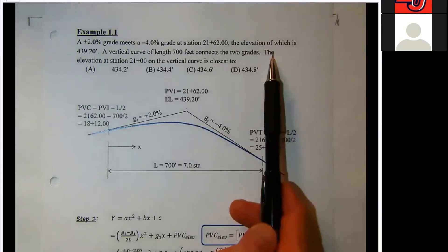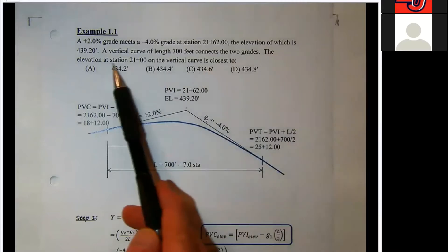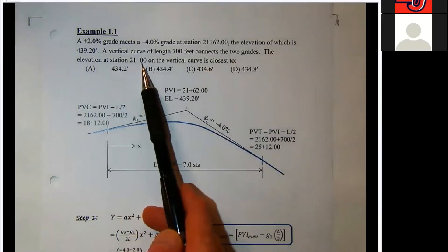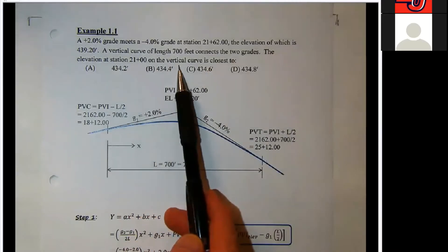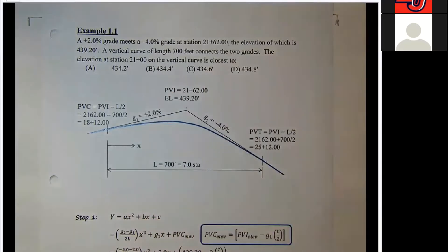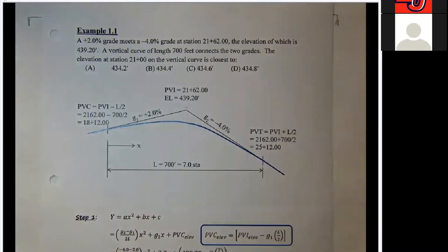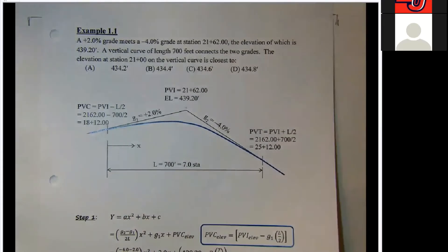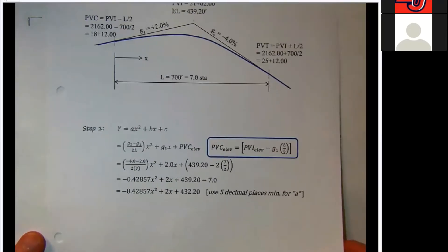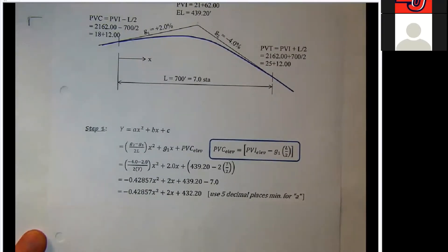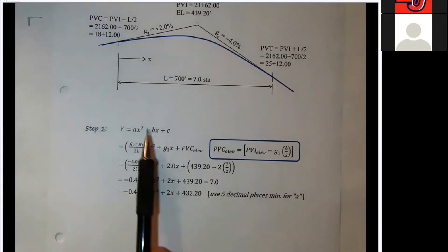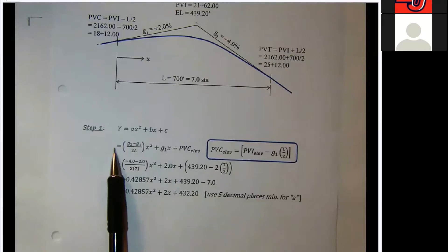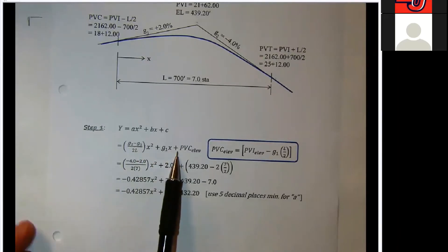The elevation at station 21 plus 0.00 on the vertical curve is closest to, and we've got four choices here. In all of these problems that deal with elevations in its simplest form, everyone takes the step one solution, and that is I need to create my parabolic equation.